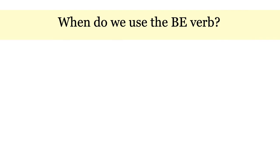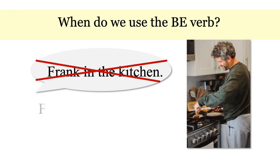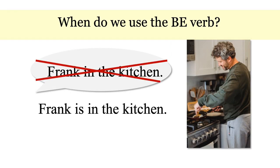In some languages you can say, Frank in the kitchen, and everybody understands. But in English, this doesn't work. We say, Frank is in the kitchen, because we need that BE verb.